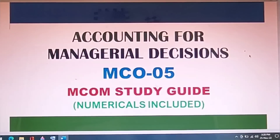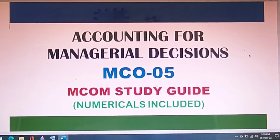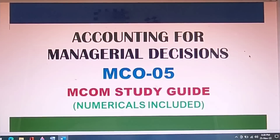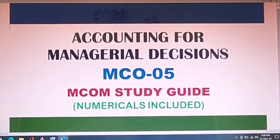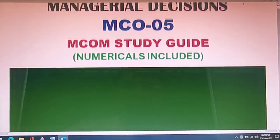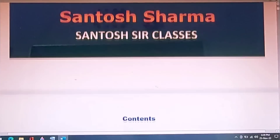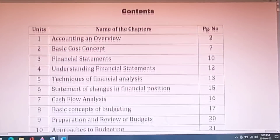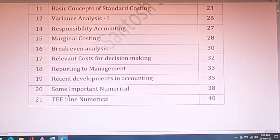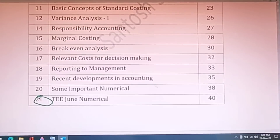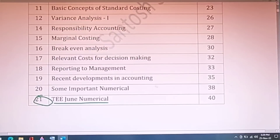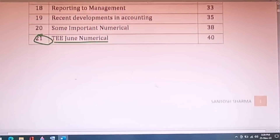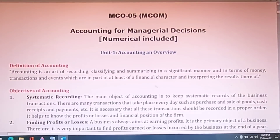Hi friends, welcome back. This is Santosh sir and I'm back with the most awaited video MCO05 on accounting for managerial decisions. In this video we'll be doing both theory and numericals. We will also solve June 2022 numericals, so please watch the video till the end. There are 20 chapters and the last chapter covers June numericals. In the previous exam you got four numericals and hopefully you'll get more numericals this time too.